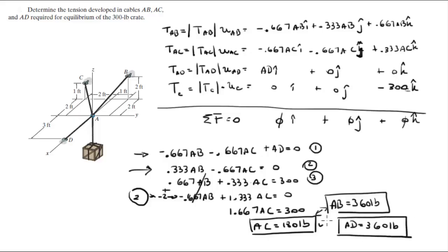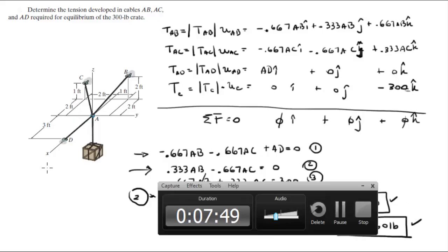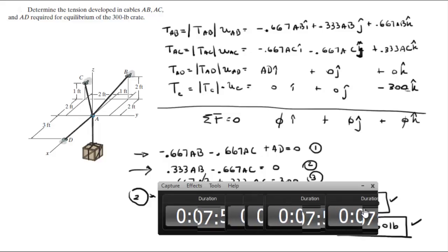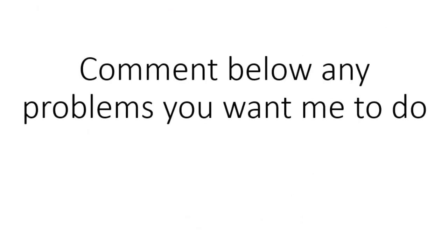So these are the three tensions on the cables to maintain this system in equilibrium: AB = 360 lb, AC = 180 lb, AD = 360 lb. Please comment below if you want me to do any problems and I'll be happy to help. Thank you.